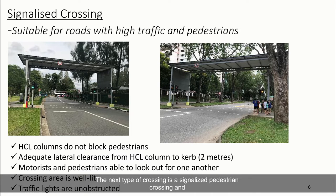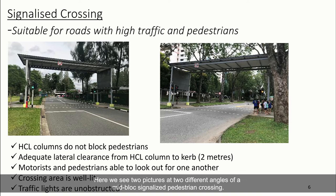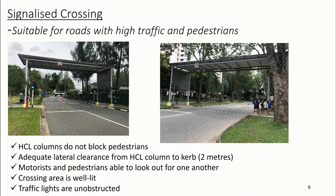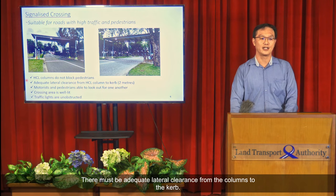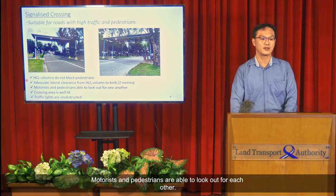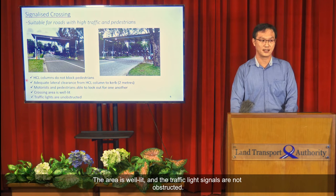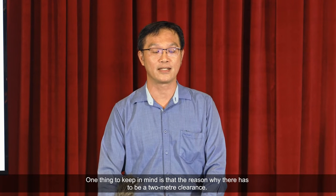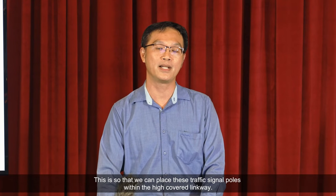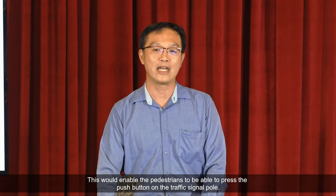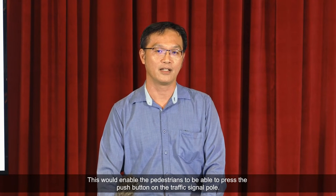The next type of crossing is a signalised pedestrian crossing, suitable for roads where there is a much higher level of interaction between traffic and pedestrians. Here we see two angles of a mid-block signalised pedestrian crossing. The HCL columns must not obstruct pedestrians, and there must be adequate lateral clearance — we would prefer the spacing to be at least two metres. The reason for the two-metre clearance is so that we can place the traffic signal pole within the HCL, enabling pedestrians to press the push button.